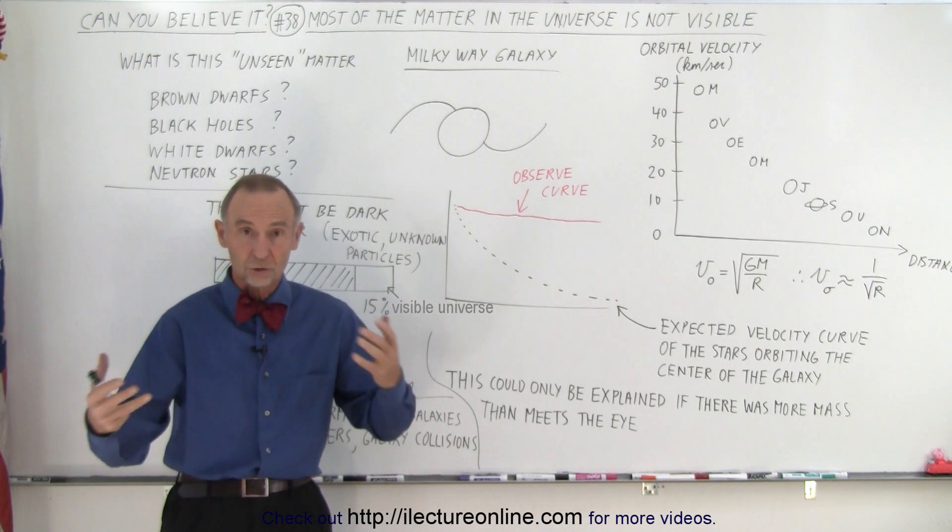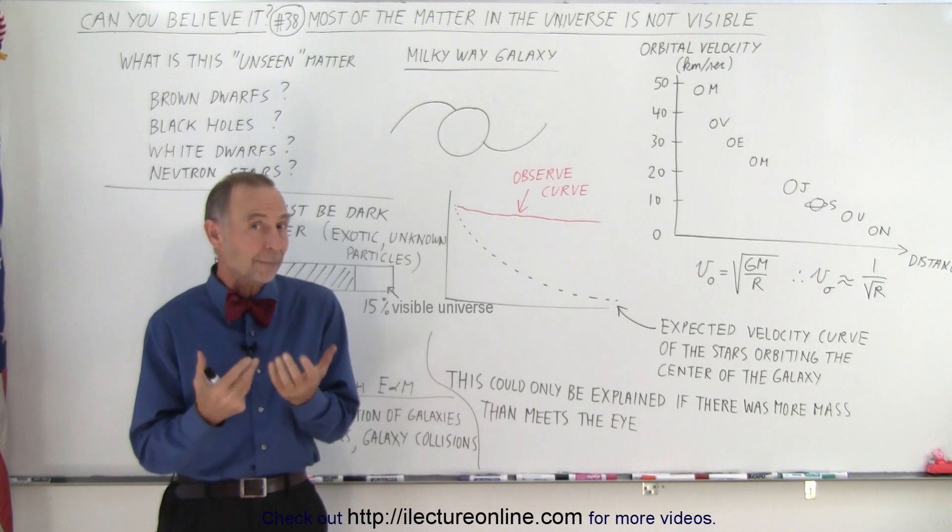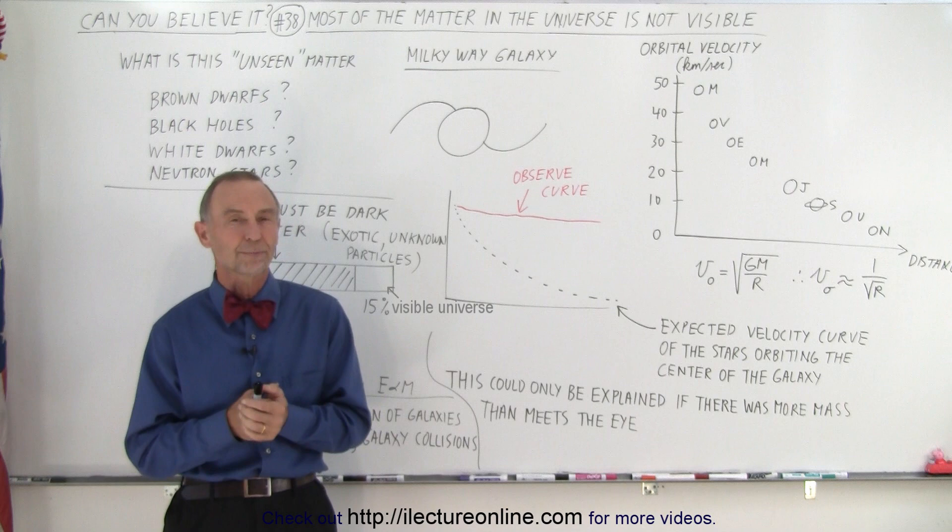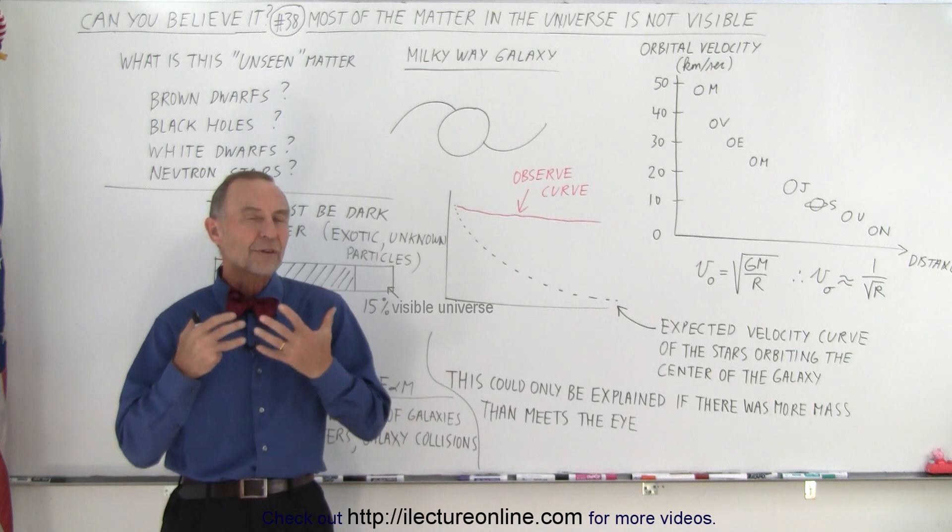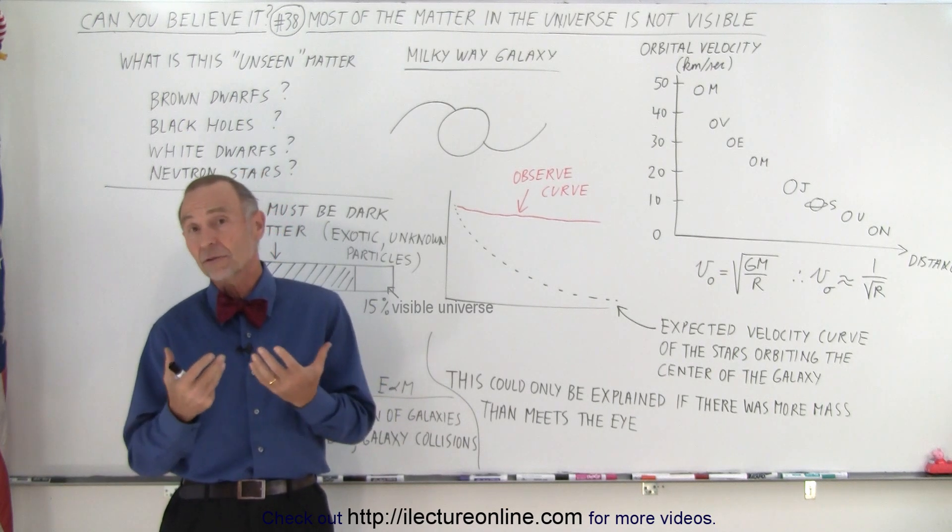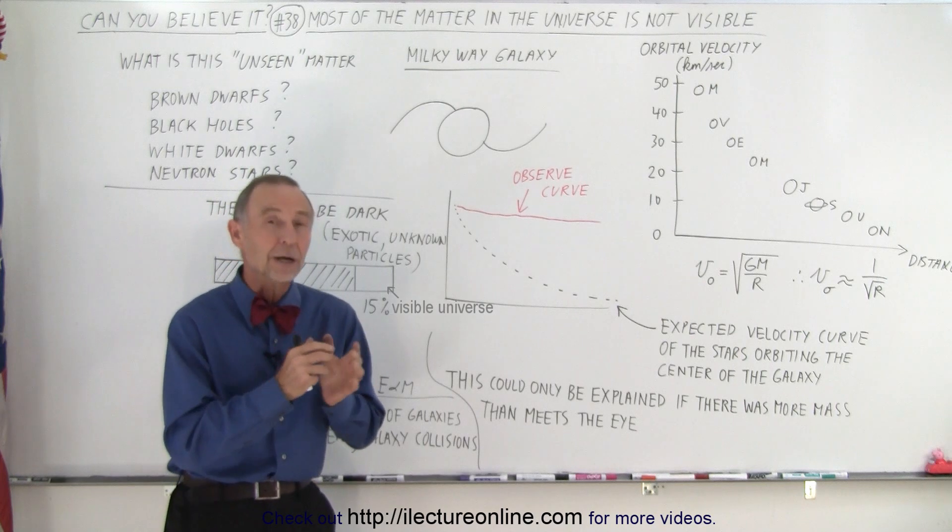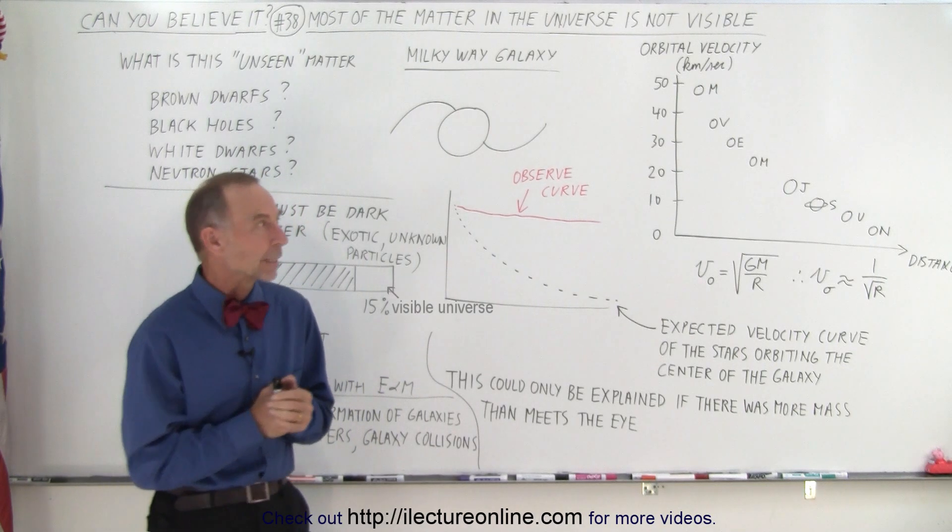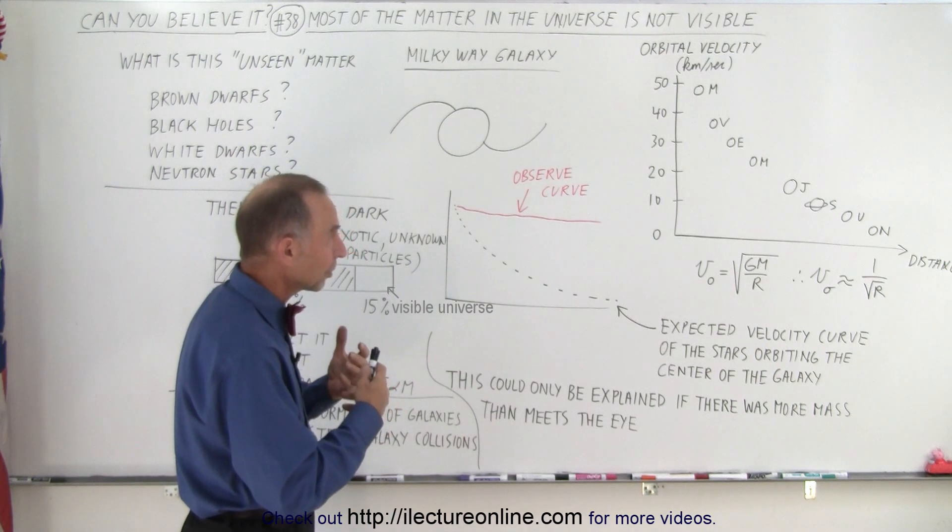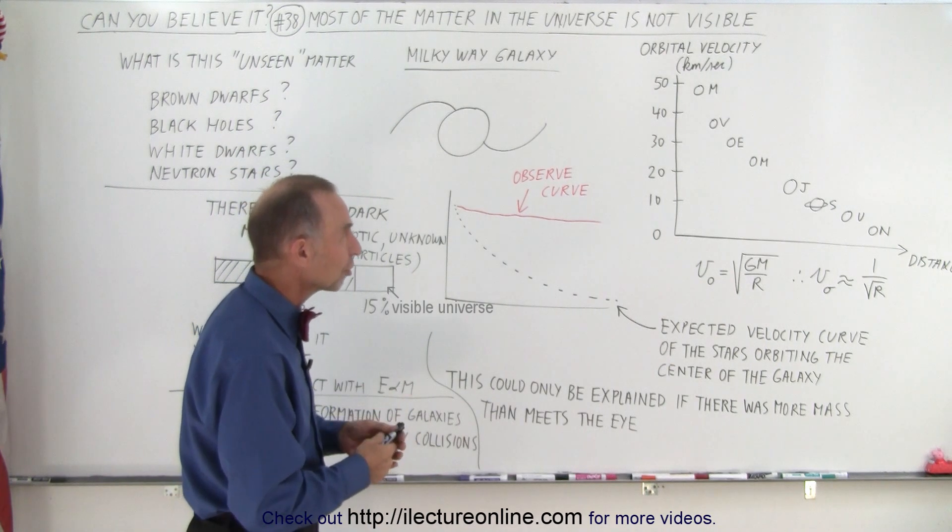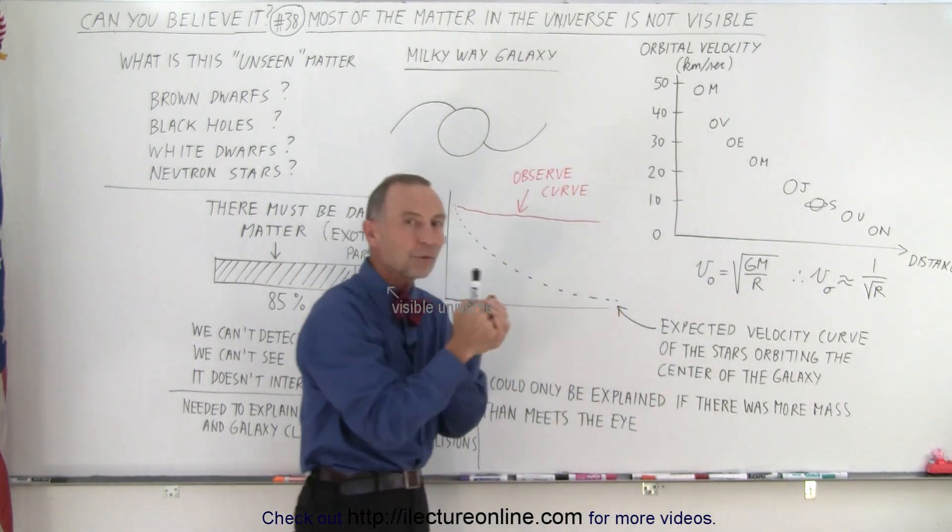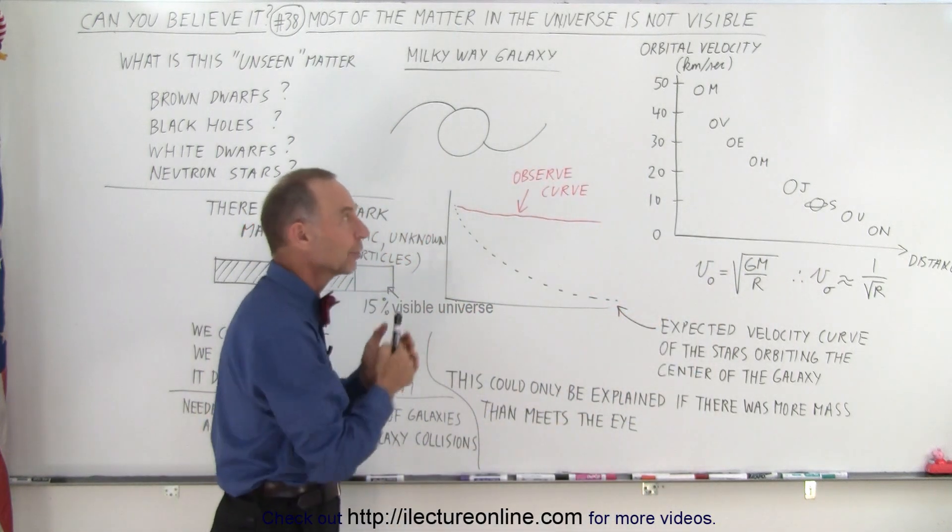Because whenever there's matter, there's gravitational forces, and whatever that matter is, it does appear to affect the gravitational forces. So what observations occur that tell us that that dark matter, as we now call it, that invisible matter, must actually be there? Well, it turns out that there's a rule, a relationship, between how far objects are away from the center of what they rotate or revolve around.